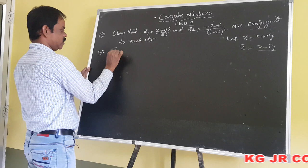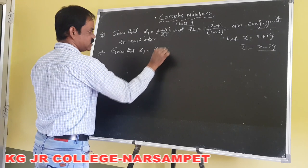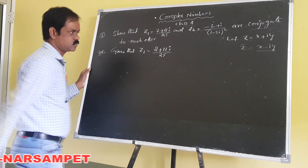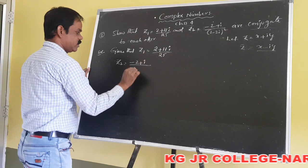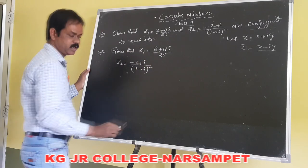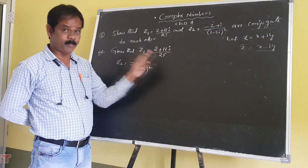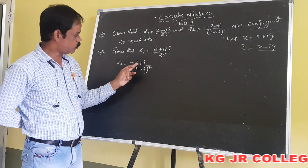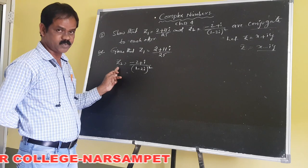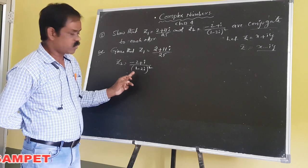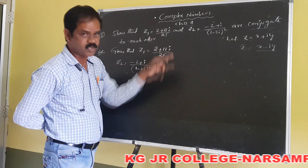Given that z1 equals (2 plus 11i) divided by 25, and z2 equals (minus 2 plus i) divided by (1 minus 2i) whole square. Students, observe the first one: it is (2 plus 11i) by 25. We have to simplify z2. After simplifying, if we get (2 minus 11i) by 25, then automatically they are conjugate to each other.